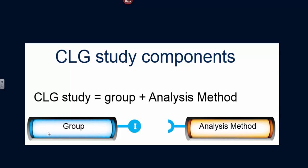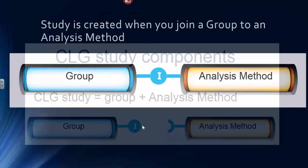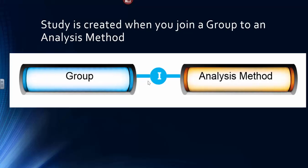You've already learned about the group, one group in particular called a cohort, in which each member of the cohort has an indexed state. That indexed state connects up to an analytic method, and a study is created when you have both a group and an analytic method.